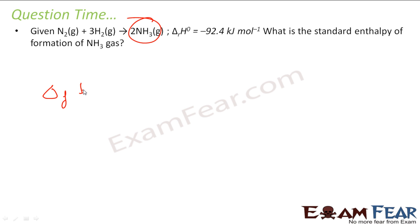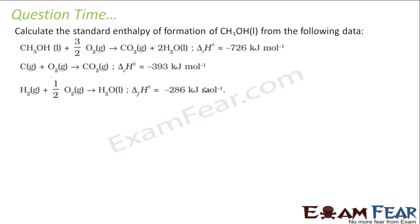See, in this case, 2 moles of NH3 is formed. So if I want to find delta formation of NH3, in this case 2 moles are formed, so I have to take this value divided by 2.